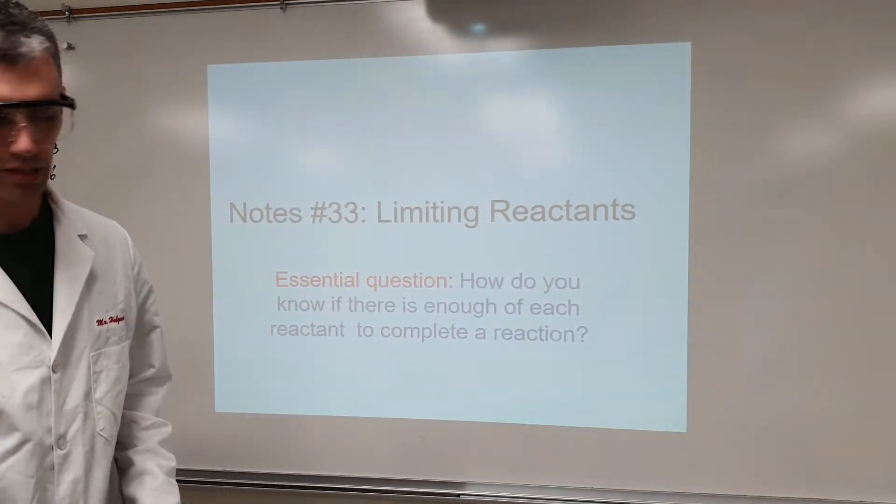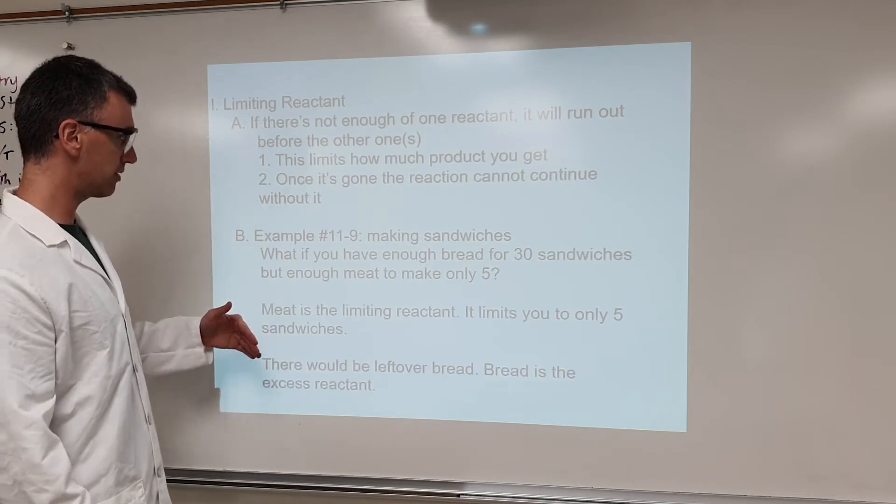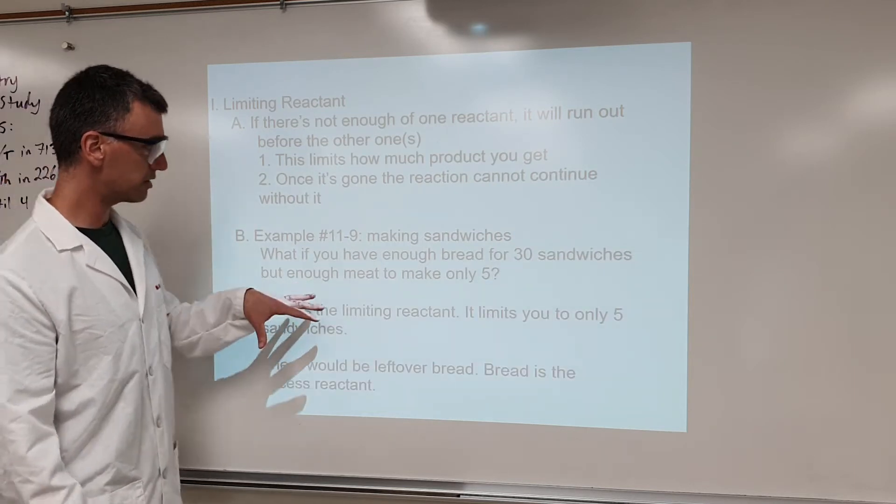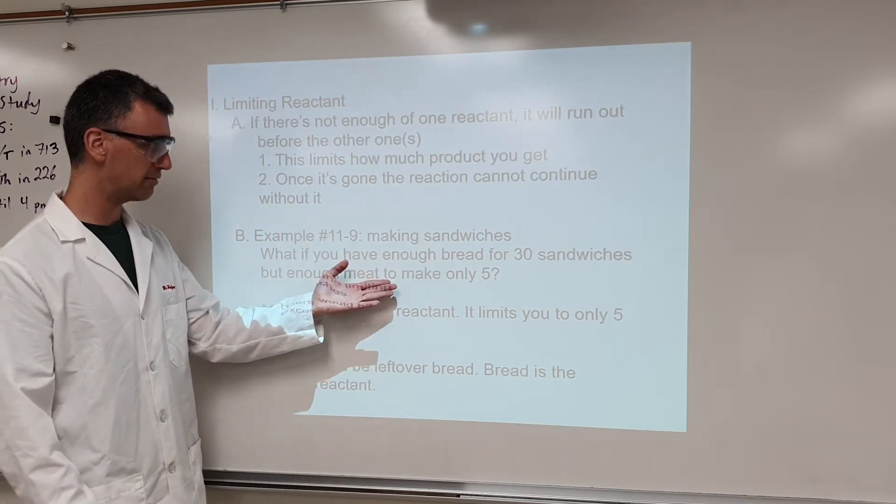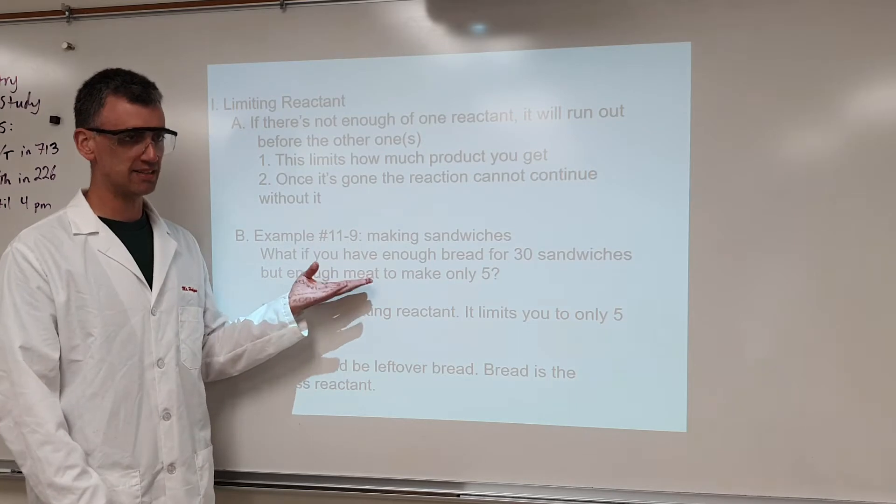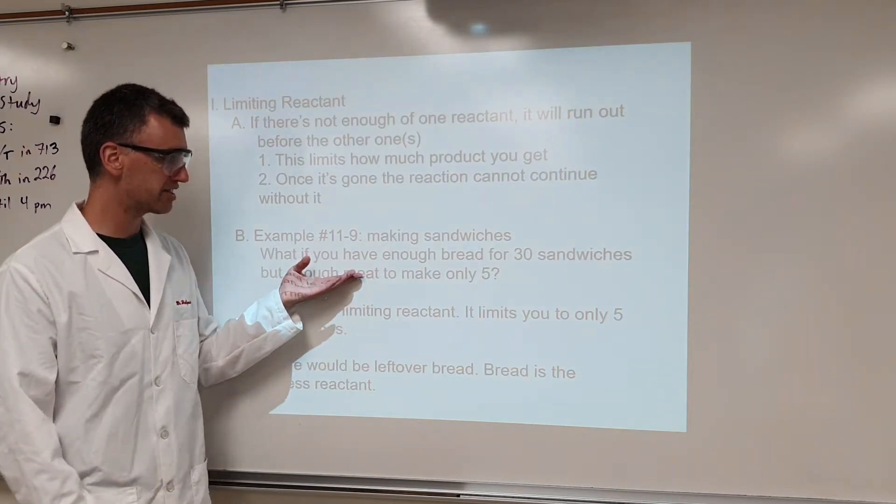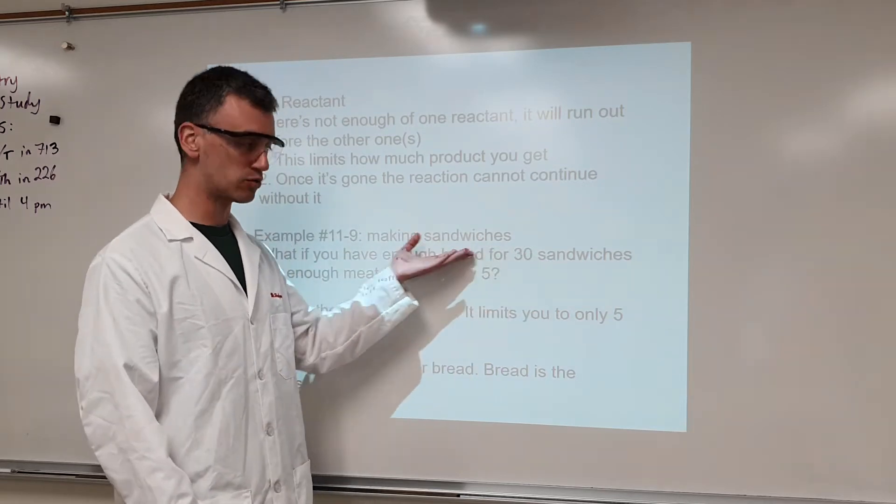Now, the limiting reactants that we talk about here in the notes, it starts out with this example, making sandwiches. If you've got enough bread for 30, but enough meat for 5, obviously the meat is what runs out first, that makes it the limiting reactant. The limiting reactant is capable of producing less product than the excess reactant that doesn't run out.